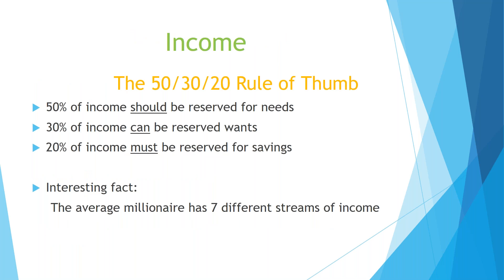The 50/30/20 rule of thumb is that 50% of your income should be spent on needs — those basic expenses. If you can, 30% of your income can be reserved for wants — future items you want to buy. And 20% of your income must be reserved for savings. An interesting fact: the average millionaire has seven different streams of income, so they're not getting rich off just working — they have other sources of income coming in.